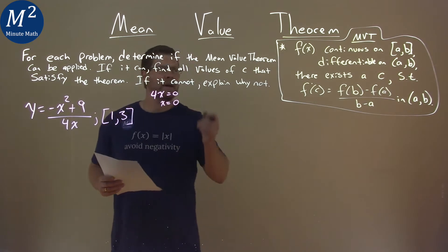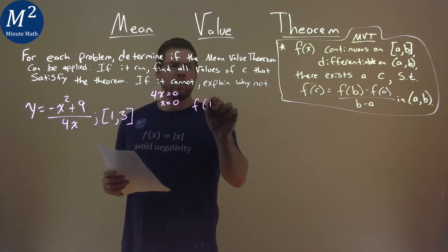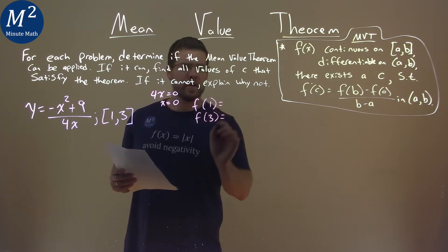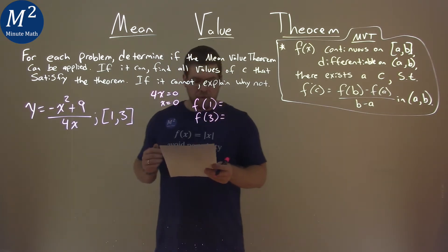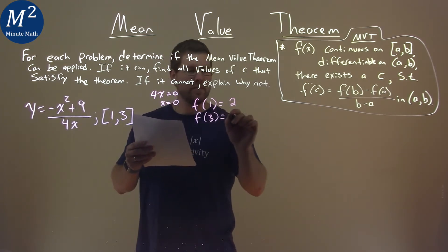So we can apply the mean value theorem. We want to find what is our f of 1 and our f of 3. Well, luckily I found that for you, and f of 1 is 2, and f of 3 is 0.